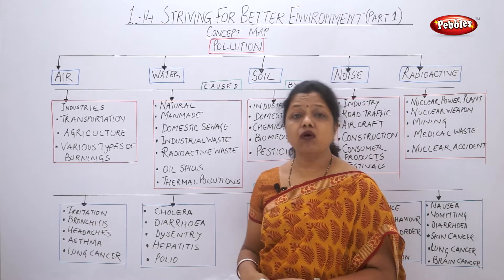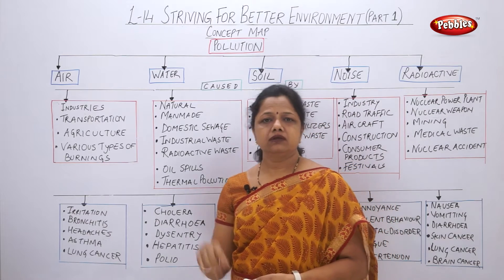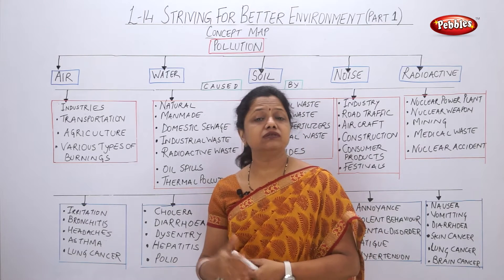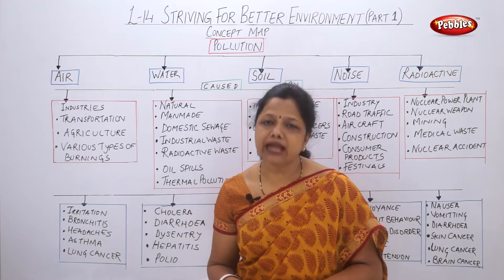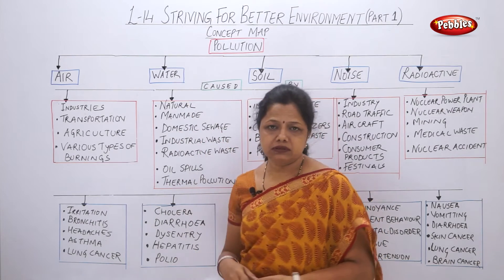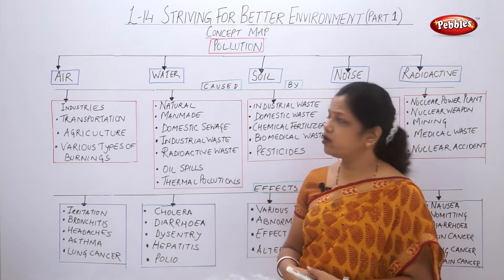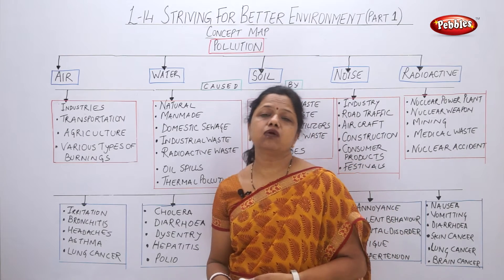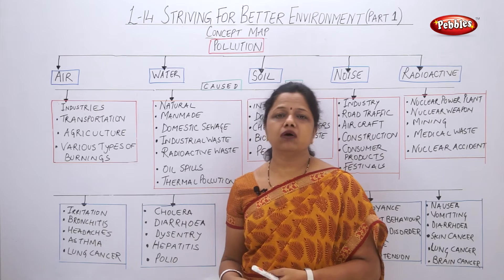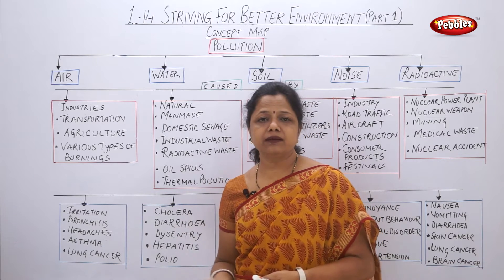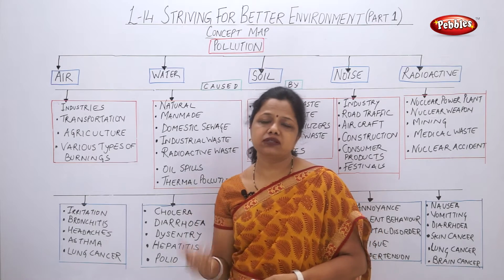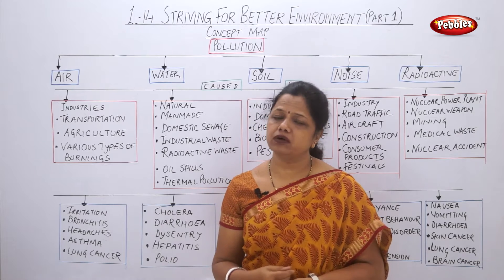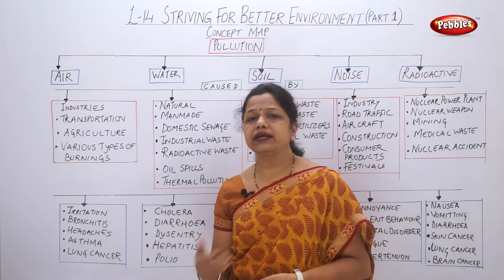What causes water pollution? Contamination in water — things present in water which are not required and which make the water contaminated. One cause is natural. Natural water pollution occurs due to volcanic eruptions or due to forest fires. The lava from volcanic eruptions goes into the water, and during forest fires, things get burned and topsoil may get mixed with the water.